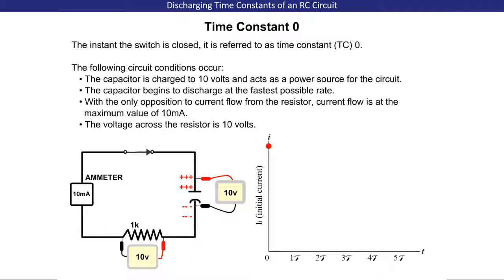The capacitor is charged to 10 volts and acts as a power source for the circuit. The capacitor begins to discharge at the fastest possible rate. With the only opposition to current flow from the resistor, current flow is at the maximum value of 10 milliamps, and the voltage across the resistor is 10 volts.